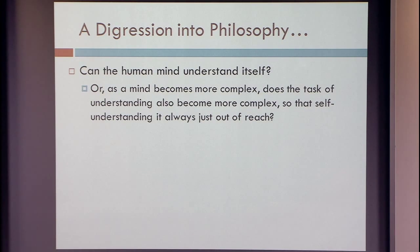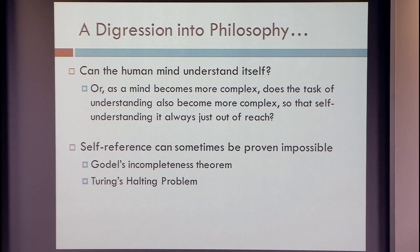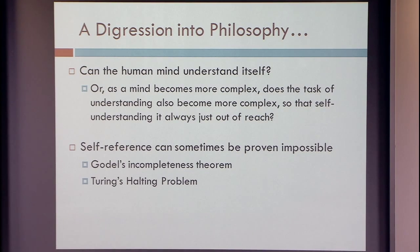You can ask self-referential questions like: can we ever fully understand ourselves? The smarter we get, the more complex our brain becomes, the more we can understand things — but on the other hand, there is more to understand. Self-referential issues are very influential and have consequences in mathematics and computer science. You can think of Gödel's incompleteness theorem or the Halting problem — these are all self-referential things where you can show that something cannot fully process itself.